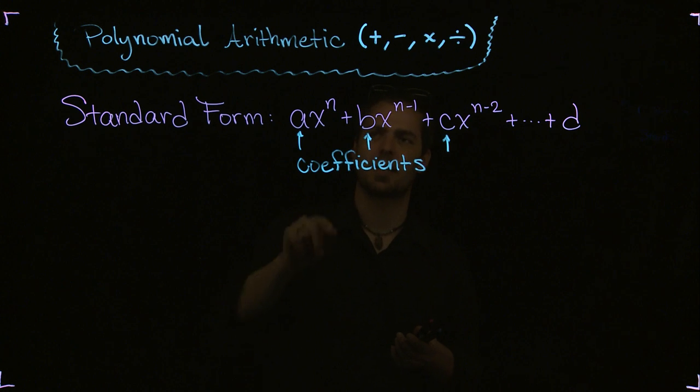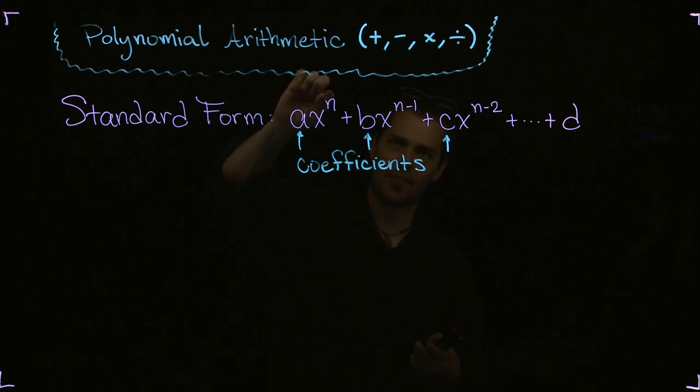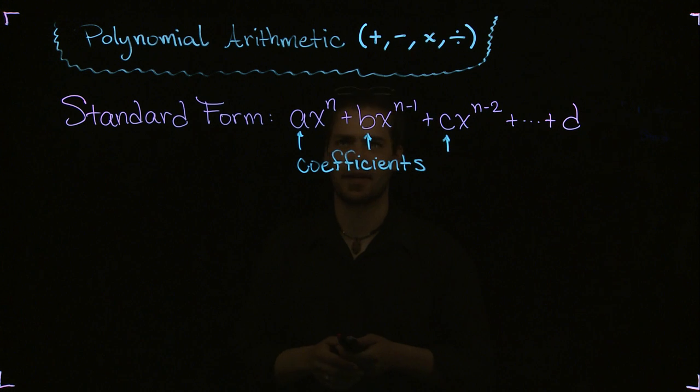All it means is that n represents the highest power. Subtract 1 from that to get the next highest power, and so on. The standard form polynomial is written with the x term to the highest power and then descending from there.